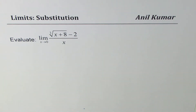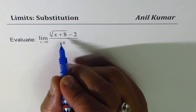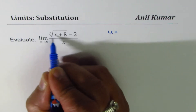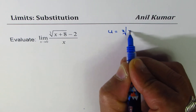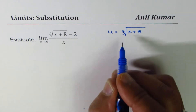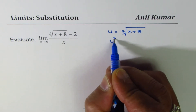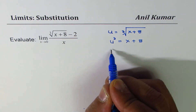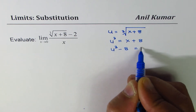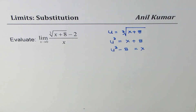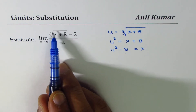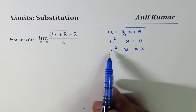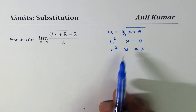Substitution of variable is a better choice. So let u be equal to the cube root part — cube root of (x + 8). If I cube both sides, I get u³ equals x + 8, and I can write x as u³ minus 8. So the numerator, cube root of (x + 8), will be written as u, and the denominator x will be written as u³ minus 8.